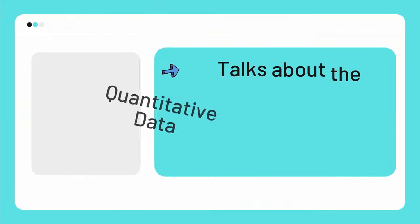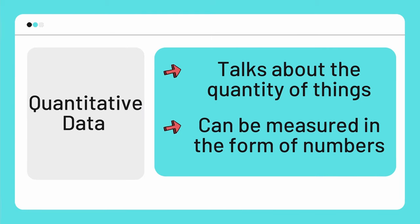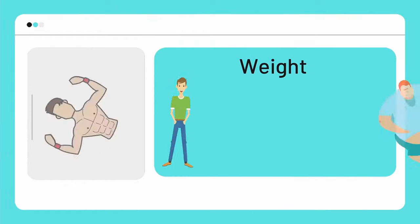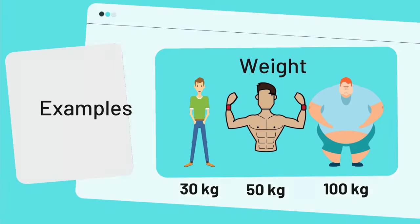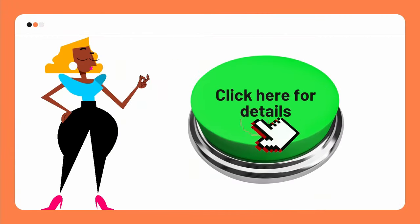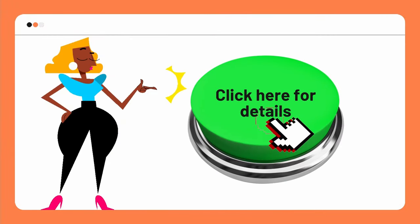Quantitative data, on the other hand, talks about the quantity of things, which means it is something we can measure in the form of numbers. For example, the weight of students in a class can be 30 kg, 50 kg, or 100 kg. We will discuss qualitative data in detail in this video and quantitative data in upcoming videos.